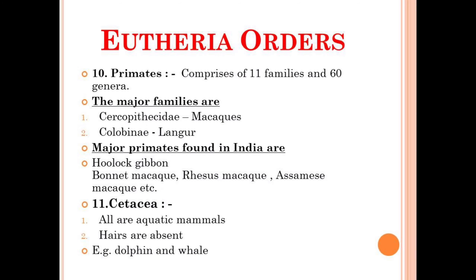The next order is Primates. It comprises 11 families and 60 genera. There are two major families among the 11 families present in the Primates. The first major family is Cercopithecidae — for example, macaques. The next family is Colobinae — for example, langur. Some examples of major primates found in India are hoolock gibbon, bonnet macaque, rhesus macaque, and Assamese macaque, etc.